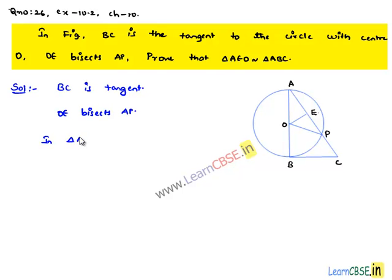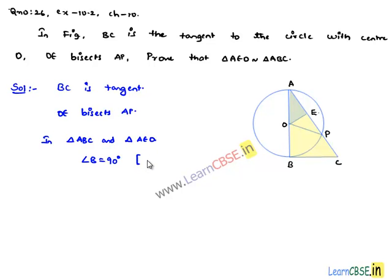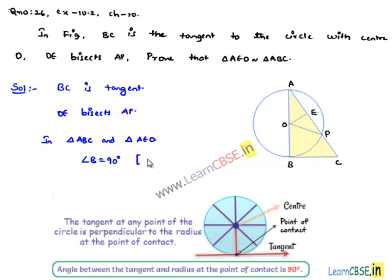In triangles ABC and AEO, angle B equals 90 degrees, since at the point of contact, the tangent is perpendicular to the radius.